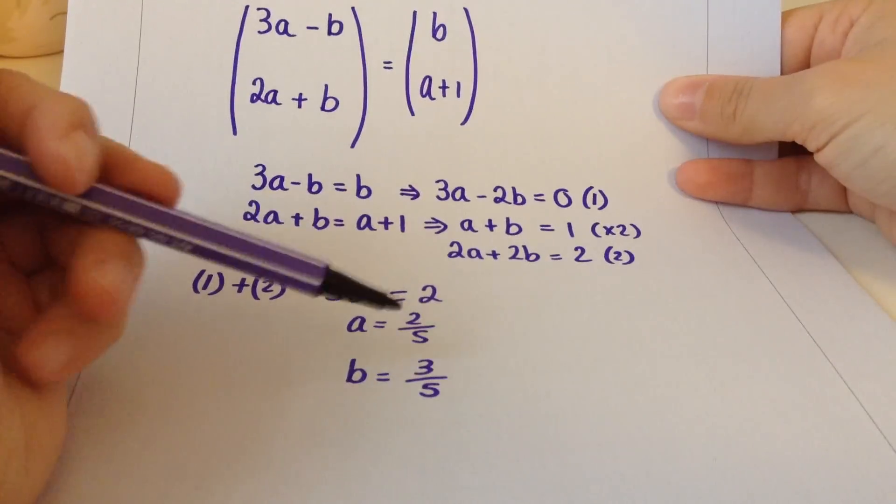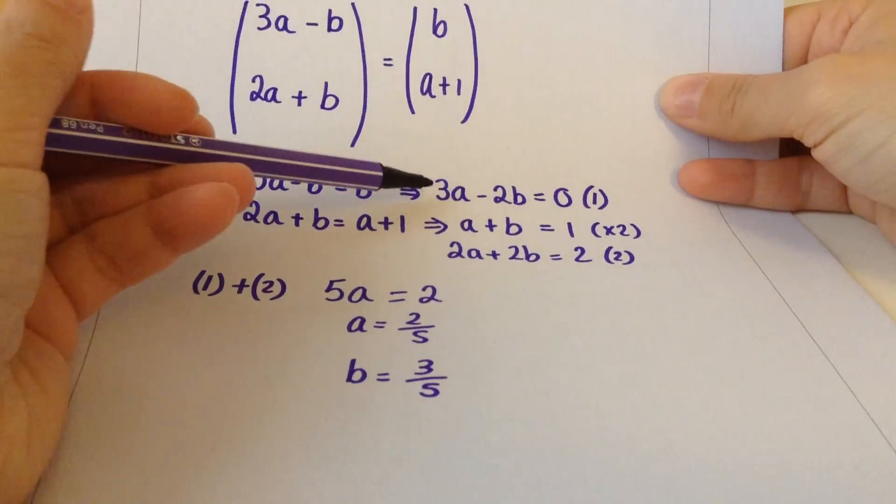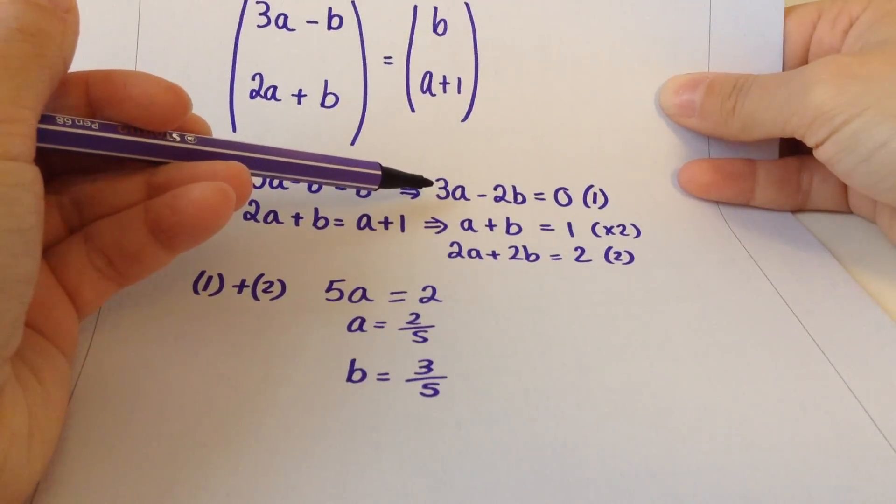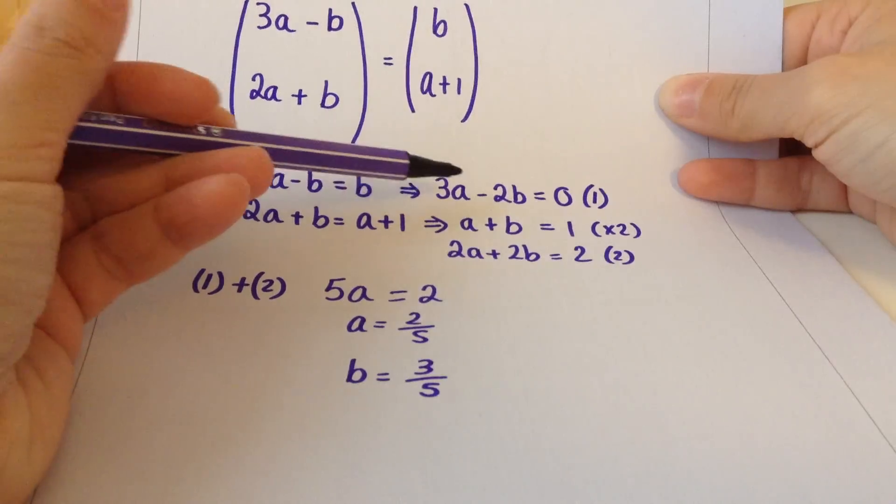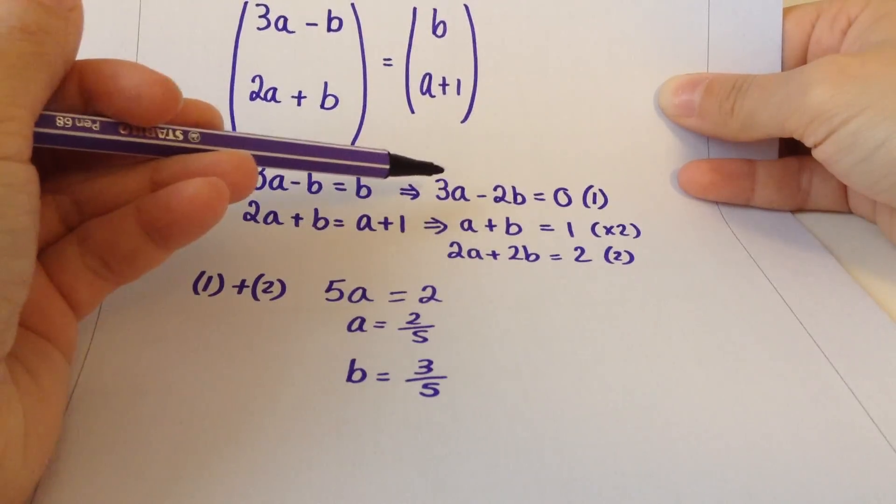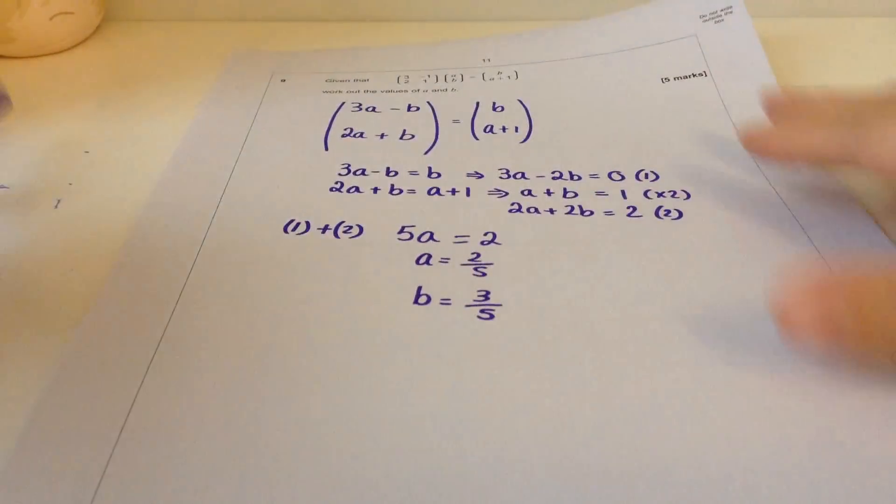Then I could check that by substituting those into this equation. That would be 6 fifths, take away 6 fifths equals 0. Yes, it does. So good, I got it right.